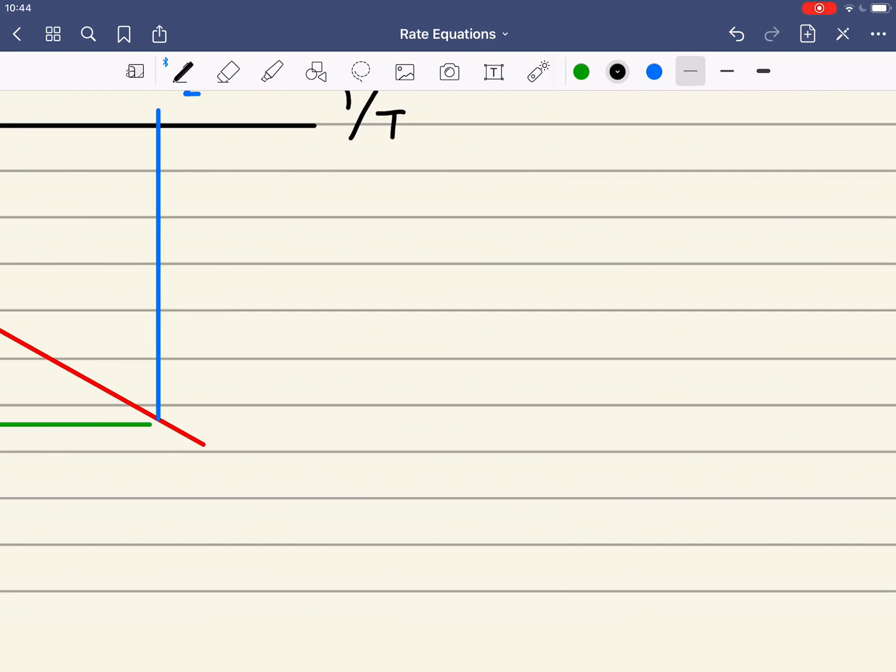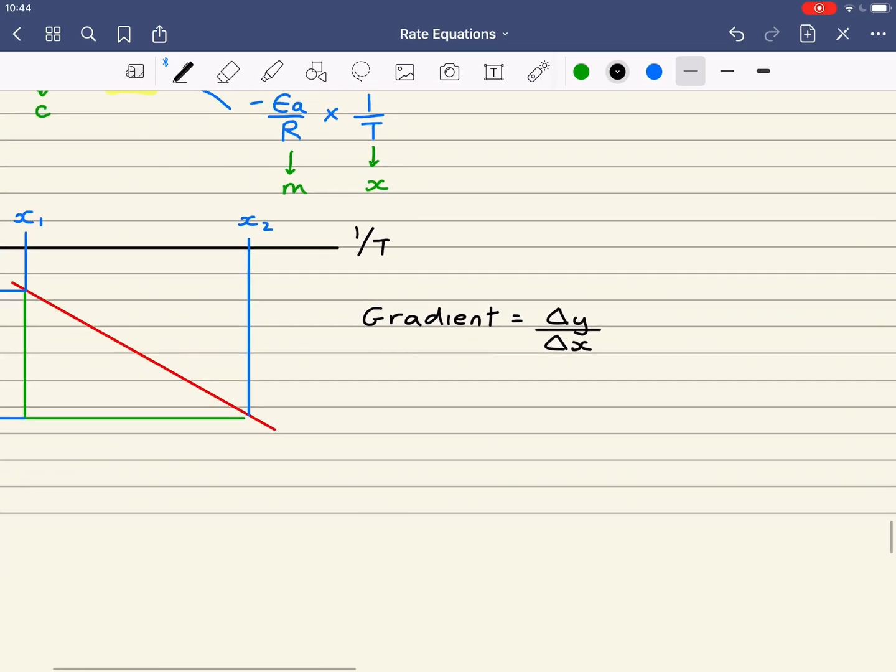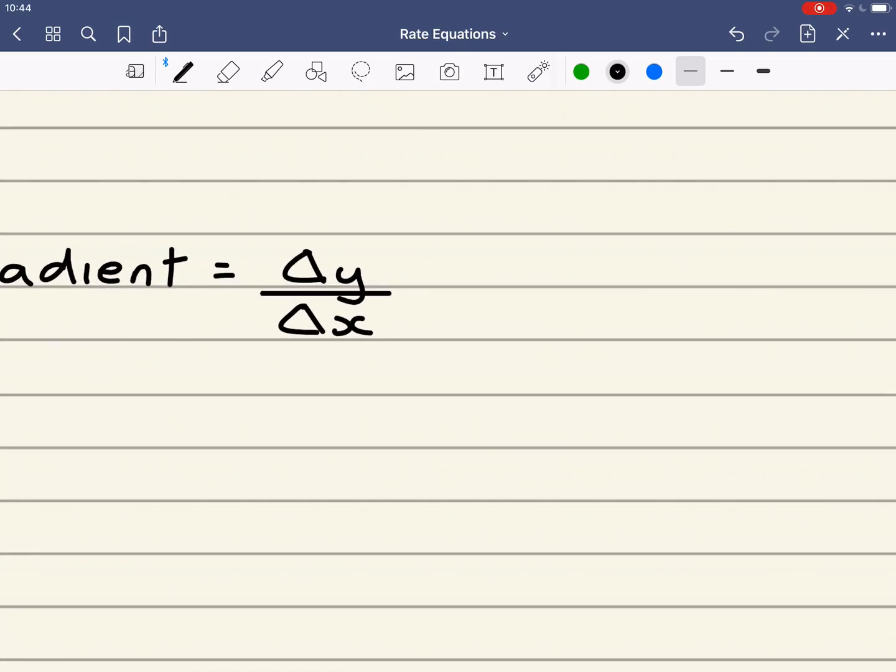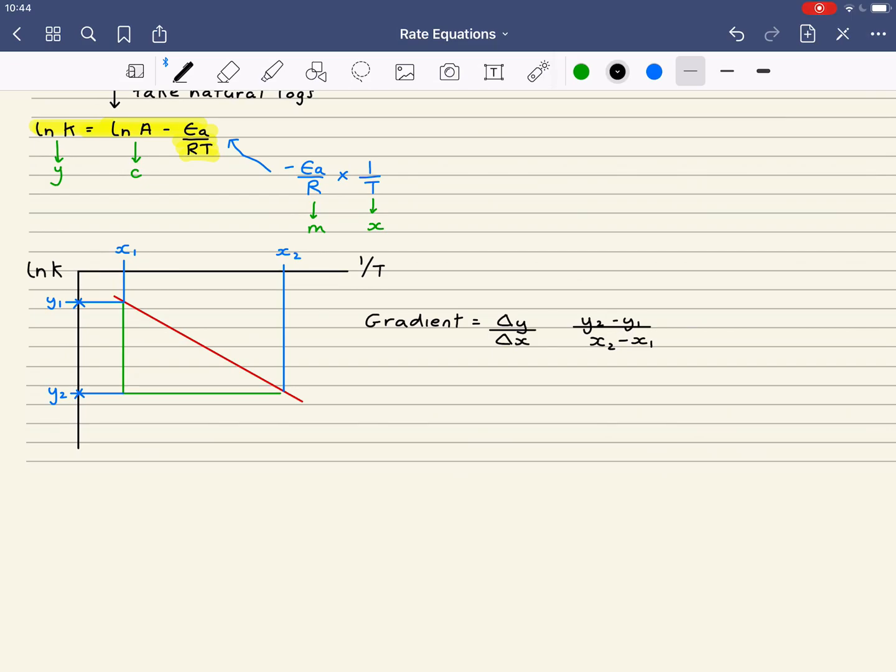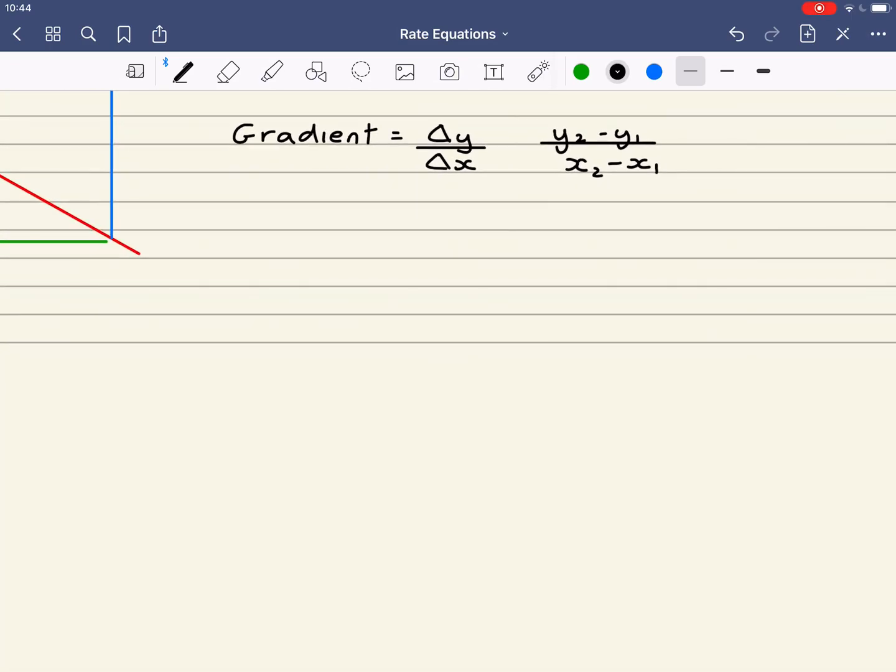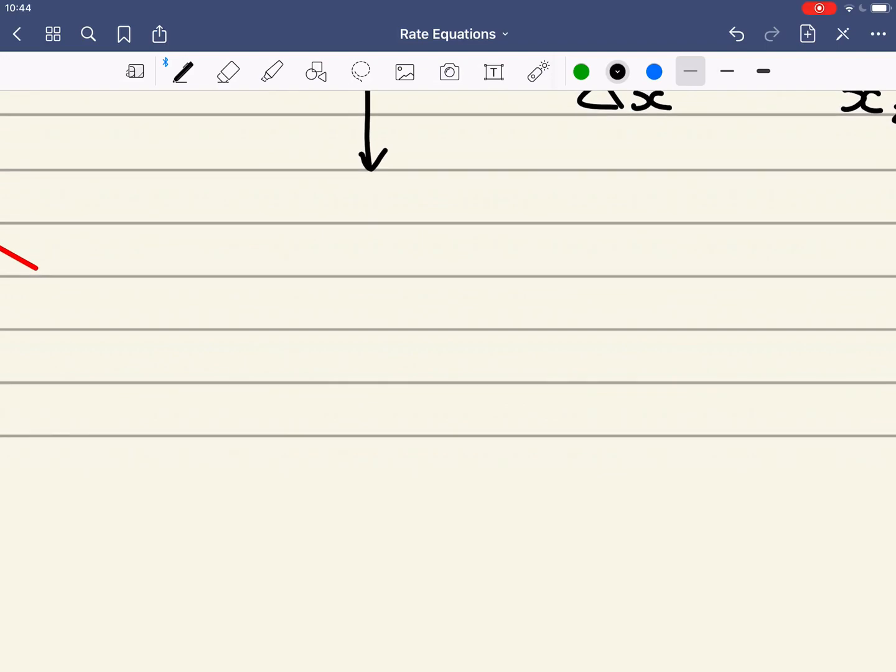So my gradient is equal to delta y over delta x. Delta y is the difference between the two y values. So it's y2 minus y1 over x2 minus x1. That's my gradient. And that there, this value, is equal to minus Ea over R. And that is equal to the gradient.